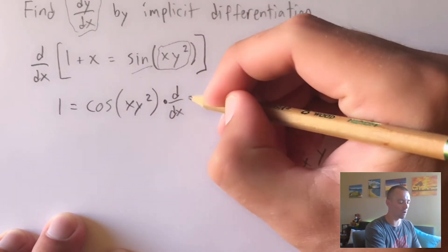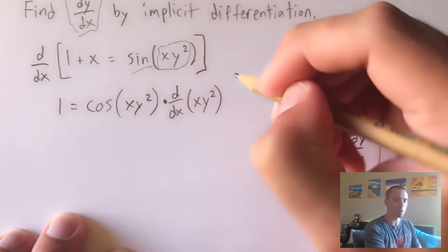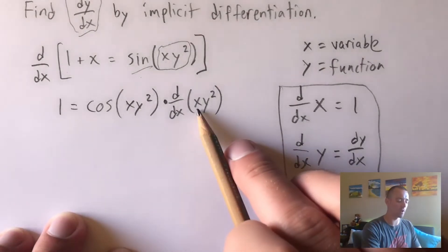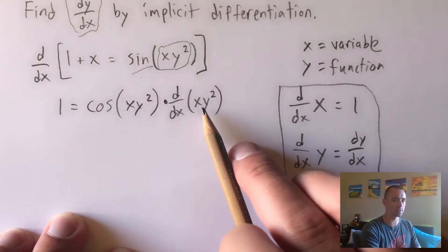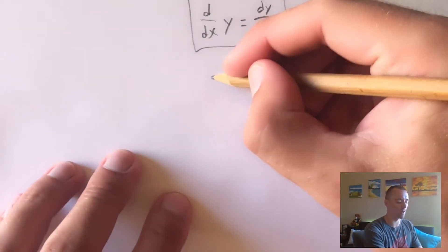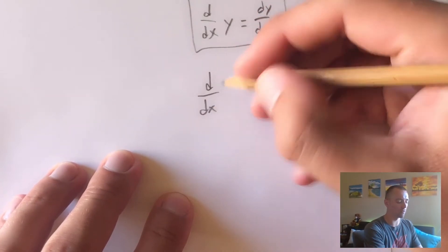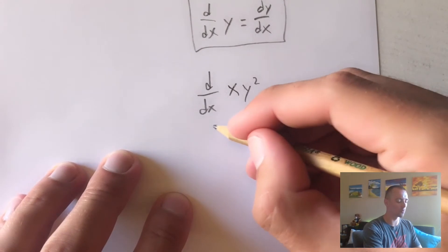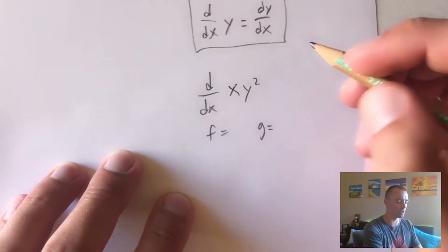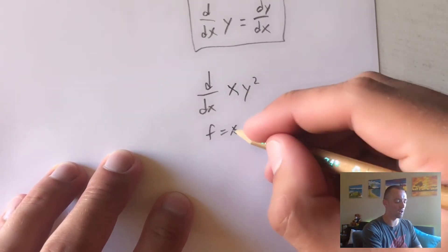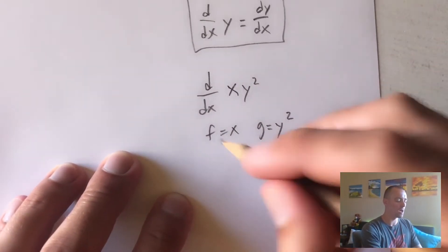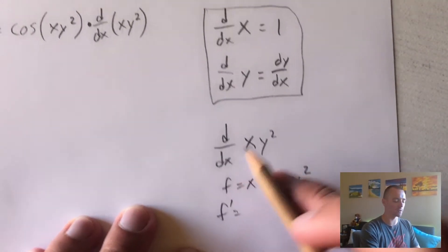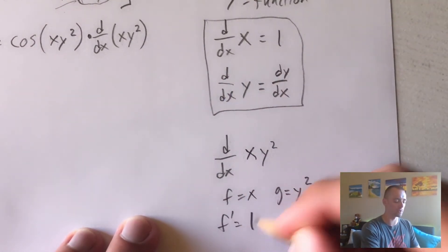Then we multiply by the derivative of our inside function, x times y squared. To take the derivative of x times y squared, we need product rule, since we have one piece times another piece. Let f equal x and g equal y squared. Then f prime — the derivative of x with respect to x — is just one.